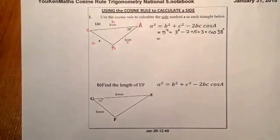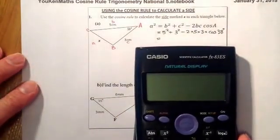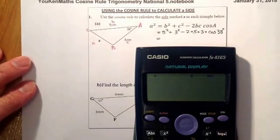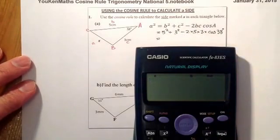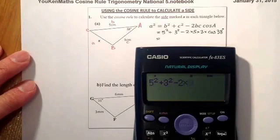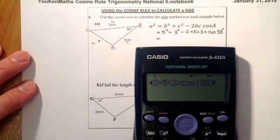So one thing that you can do here is you can just fire all of that straight into the calculator and hopefully from there we get an answer for a². So what I'm going to do is type the whole row in here and just press equals. So 5² + 3² - 2 × 5 × 3 × cos(38°). Close the bracket, press equals.